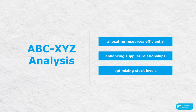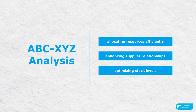Why delve into ABC XYZ analysis? This tool can help your company improve inventory management by allocating resources efficiently, enhancing supply relationships, and optimizing stock levels to meet customer demand without any excess or shortages. The ABC XYZ analysis is super useful not just for keeping track of inventory, but also for managing procurement categories. It can guide you to talk to your suppliers, set up inventory policies, and manage risks, helping you maintain inventory at the right levels and making the entire supply chain run smoother.